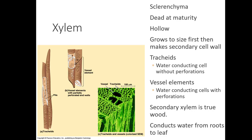Xylem is made up of sclerenchyma — dead at maturity and hollow. They grow to their size first and then start producing a secondary cell wall. Within xylem are tracheids, which are water-conducting cells without perforations, and vessel elements, which are water-conducting cells with perforations. These tend to occur more in angiosperms than gymnosperms. Secondary xylem is true wood, and xylem conducts water along with minerals from roots to the leaf.